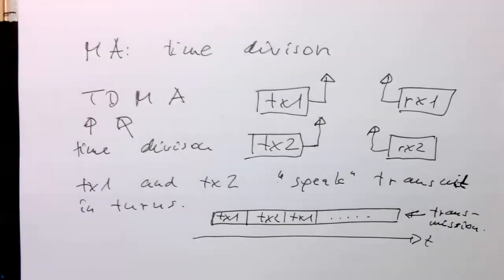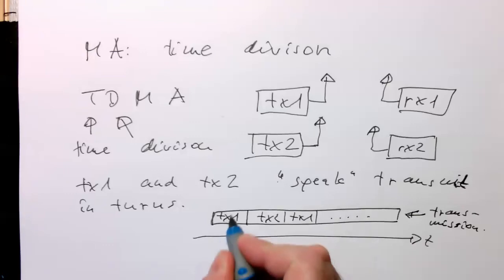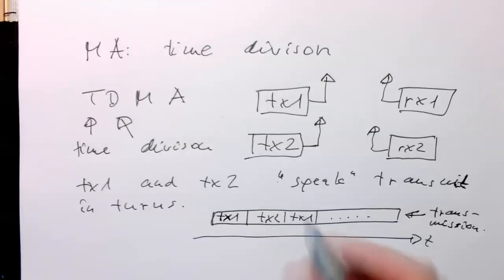The problem is we need to synchronize this extremely well. Imagine in mobile phone communication where people move around - this is quite a massive coordination issue. But it's used in mobile phone communication and many other areas. It's just a matter of how easy it is to coordinate the time and find the absolute time frame.